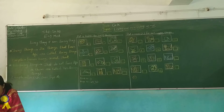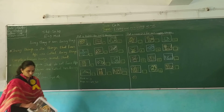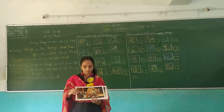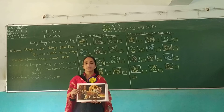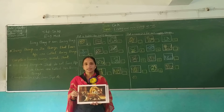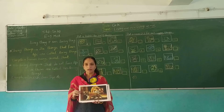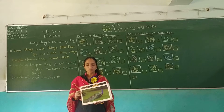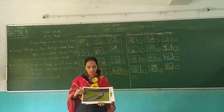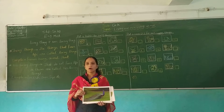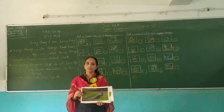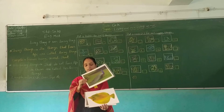Living things — I will explain. Which picture is this? Tiger. Tiger is a living thing. And next, which picture is this? Peacock. Peacock is a living thing.